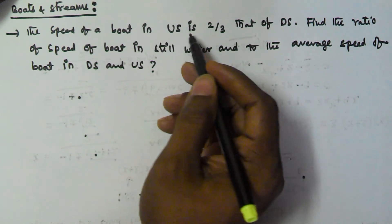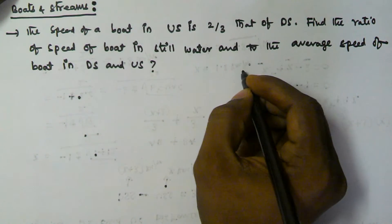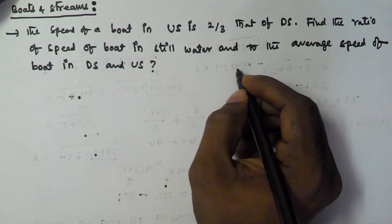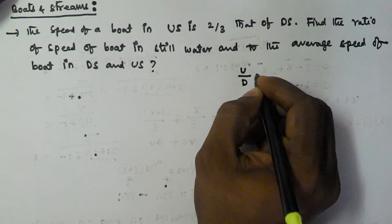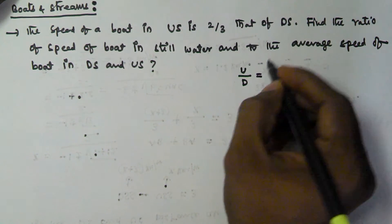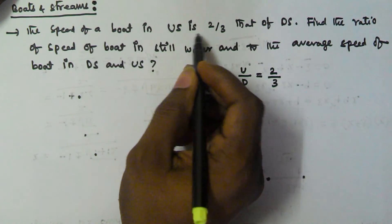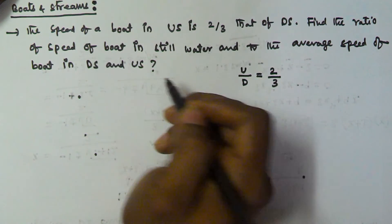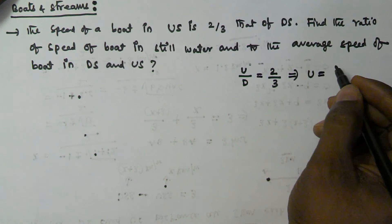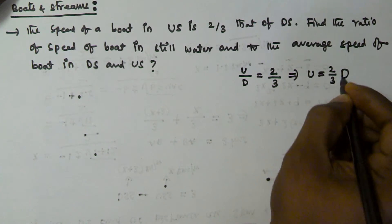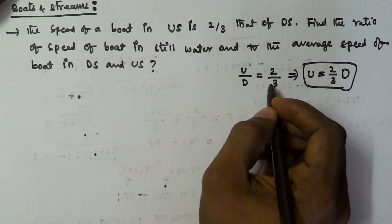The speed of the boat in upstream is 2/3 that of downstream. So if u is the upstream speed and d is the downstream speed, then the ratio u/d is equal to 2/3. That means upstream speed is equal to 2/3 of downstream speed. From this we can also write upstream by downstream is equal to 2/3.